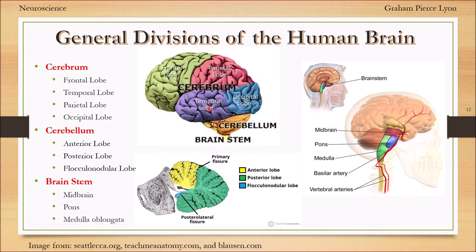There's another way to divide the brain. We have the cerebrum, the cerebellum, and the brainstem. The cerebrum is broken into these different lobes. Your cerebellum has the anterior lobe and posterior lobe. And then you have the brainstem - the midbrain, the pons, and the medulla oblongata.